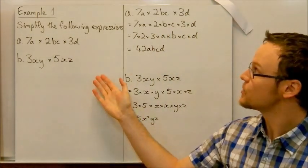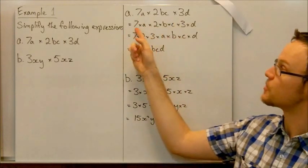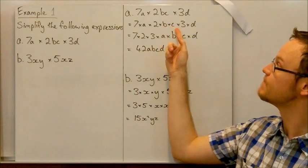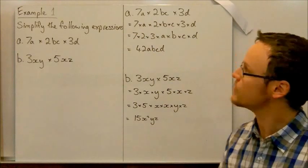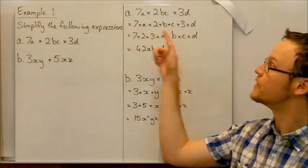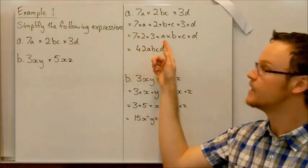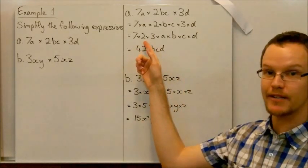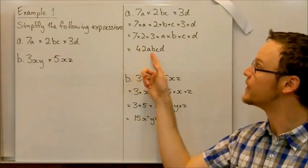Here we have a couple of examples. Our first example, we expand it out to read 7 times a times 2 times b times c times 3 times d. We can rearrange them to put all the numbers together at the front, 7 times 2 times 3 times a times b times c times d. So 7 times 2 is 14, 14 times 3 is 42, and we're left with 42abcd.